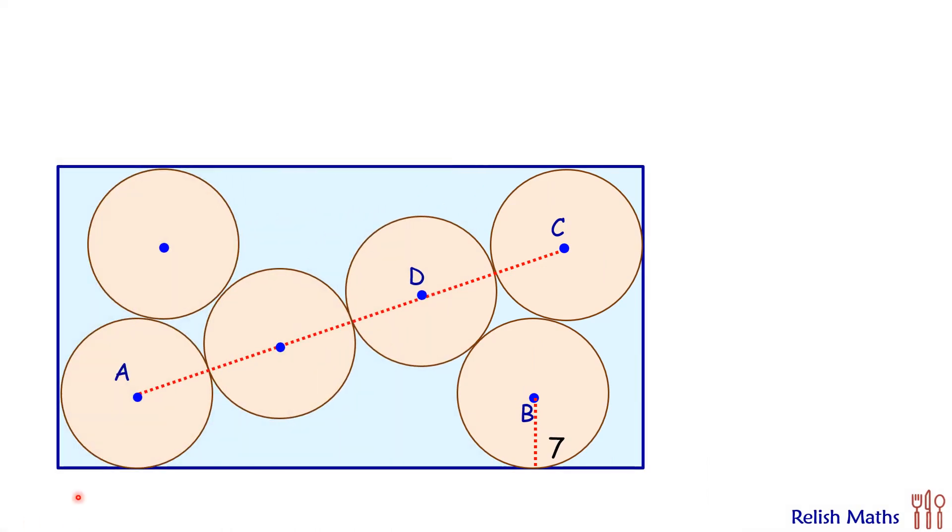Let's check the solution. Here we'll join AB and extend it a little bit, and from point C we'll drop a perpendicular CF. Now if we get the value of CF, then we just add 7 and 7 to get the breadth of the rectangle. For the length of the rectangle, it will be R plus AF plus R again.